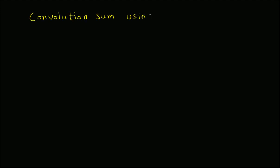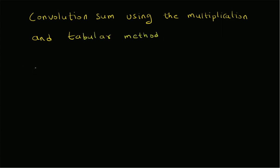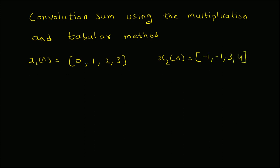We are given two simple sequences, each of duration 4. x1(n) = {0, 1, 2, 3} and x2(n) = {-1, -1, 3, 4}. We want to find the convolution x(n) = x1(n) convolved with x2(n).